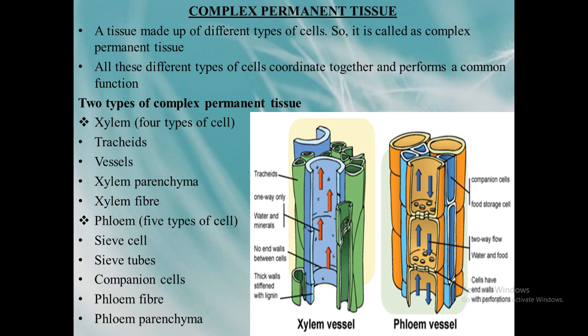The next type is complex permanent tissue. Simple permanent tissue is made up of only one type of cell, whereas complex permanent tissue is made up of different types of cells — that is why it is called complex permanent tissue. All these different types of cells coordinate together to perform a common function. The tissue also contains thick and thin cell walls.